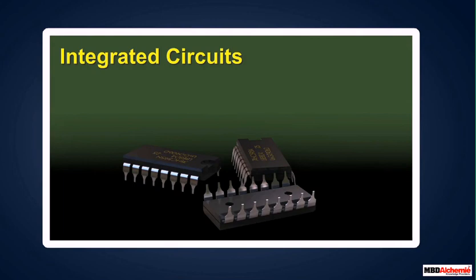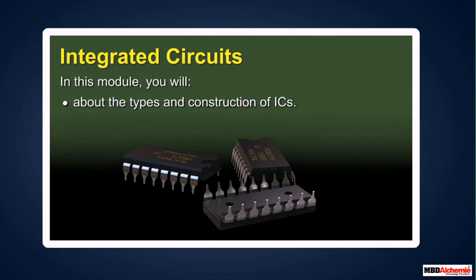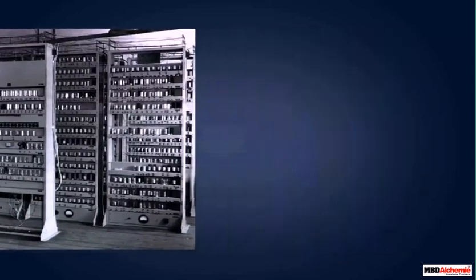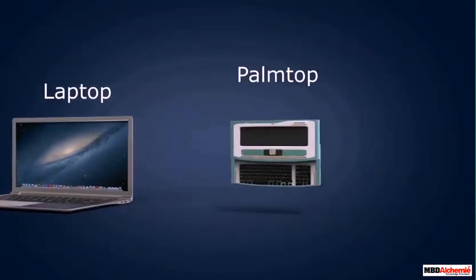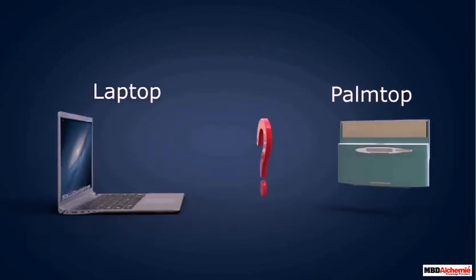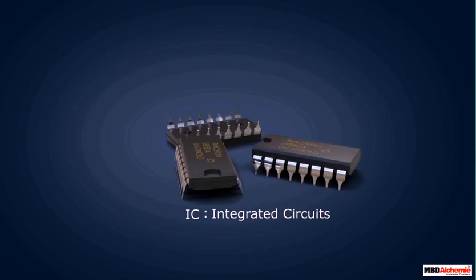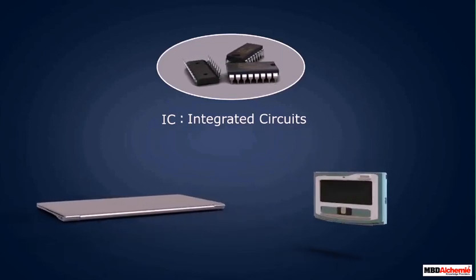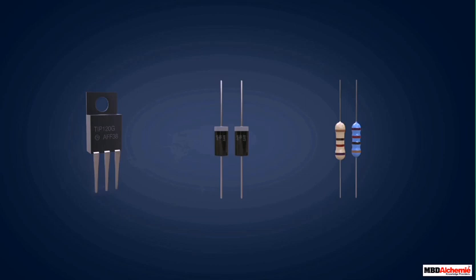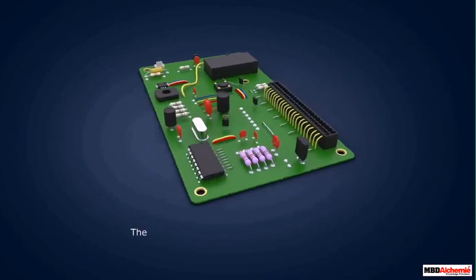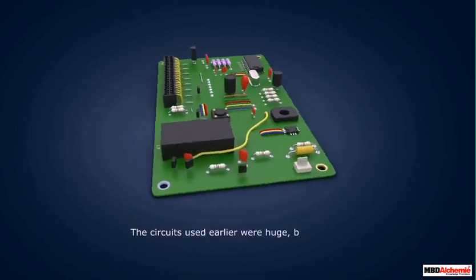Integrated circuits. In this module, you will learn about the types and construction of ICs. Earlier, the size of computers used to be very big; however, nowadays laptop computers and palmtop computers are available. The miniaturization of electronic gadgets was made possible by ICs. Earlier, electronic circuits were prepared using transistors, diodes, and resistors, joined using conducting wires, making these circuits huge and bulky, and not reliable.